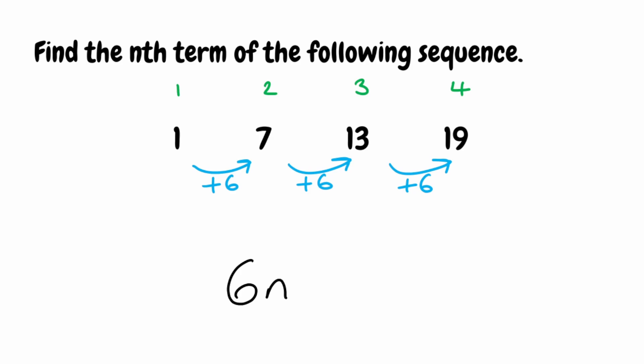Now we need to find the bit that comes at the end, so we're going to find term number 0 by going backwards. We know that something plus 6 gives us 1, so we do 1 take away 6, which gives us negative 5. So our term number 0 is negative 5 — that's the value that goes at the end of our nth term. The nth term of this sequence is 6n − 5.